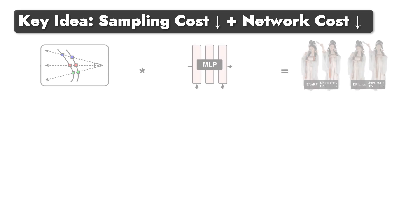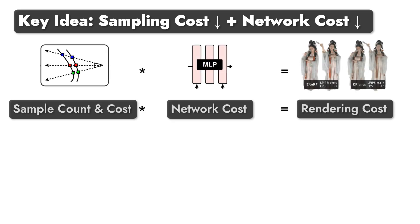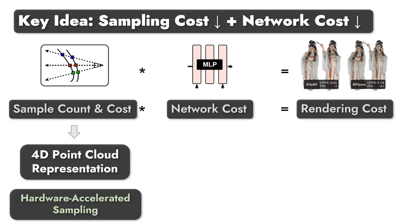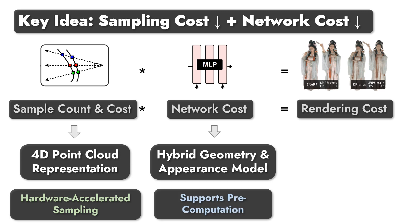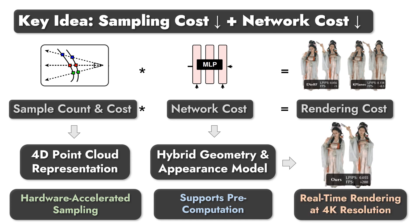We build 4K4D on the intuition that the rendering speed is determined by two main factors: sampling cost count and network evaluation cost. To reduce sampling cost, we adopt a 4D point cloud representation for hardware-accelerated rasterization, which eliminates the sampling cost. We also build our hybrid geometry and appearance model to support pre-computation, which eliminates the network evaluation cost, thus greatly increasing the rendering speed for dynamic view synthesis, achieving real-time performance at 4K resolution.